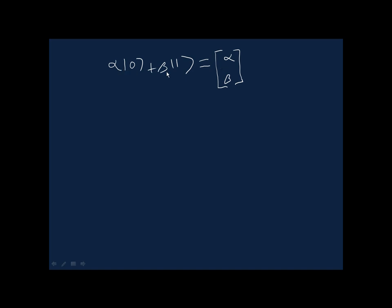If alpha was 0.8 and beta was 0.6, then we'd have the corresponding components over here. We're working in the 0, 1 basis for the vector representation. This is the amplitude for the 0 state, and this is the amplitude for the 1 state.